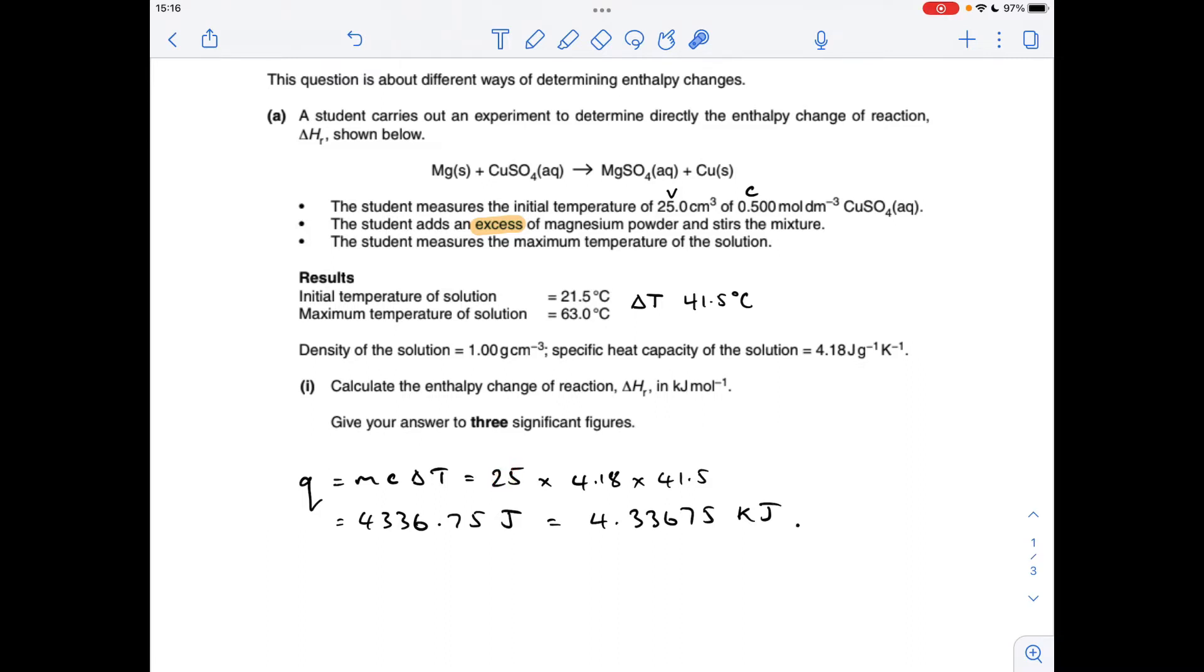So the mass of the solution is going to be 25 grams because we've got 25 cm cubed and we're told that its density is 1 gram per cubic centimeter. So 25 grams times 4.18, the specific heat capacity which we're told there, times 41.5, the temperature change. So that gives us that many joules, but because we're going to express our final answer in kilojoules per mole, we're going to divide by 1,000 and put it into kilojoules.